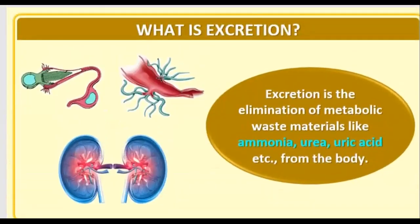What is the meaning of excretion and what role does it play in the physiology of a human being? Excretion is basically the removal of toxic elements and substances from our body. The substances that accumulate in our body can be removed. So basically this is a key function.